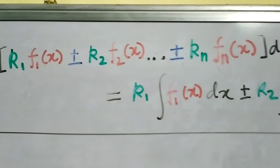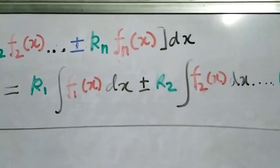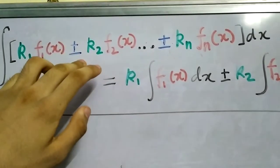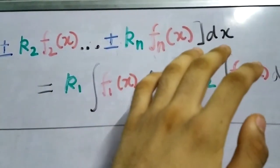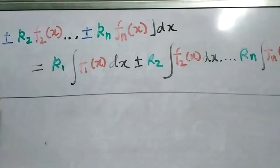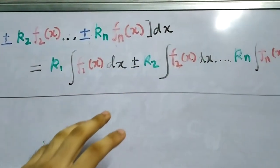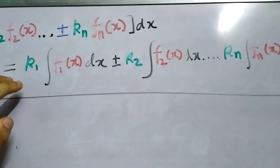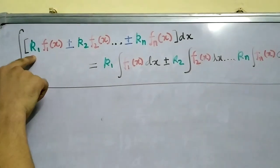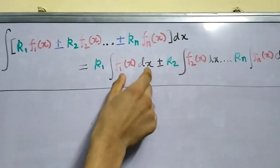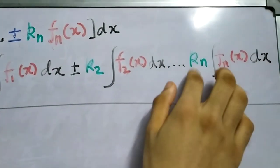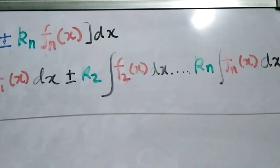We can generalize these two results into a single result. If we have k1·f1(x) plus k2·f2(x) plus so on till kn·fn(x), that is n functions with their coefficients, we can split the integral and take out the coefficients: k1 times the individual integral, plus k2 times the next integral, and so on till kn times the last individual integral.